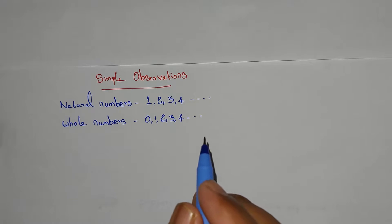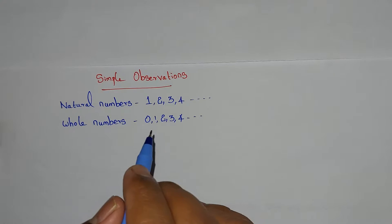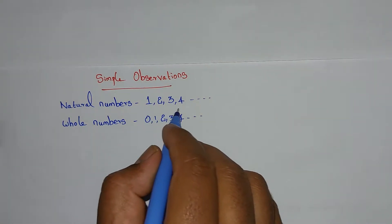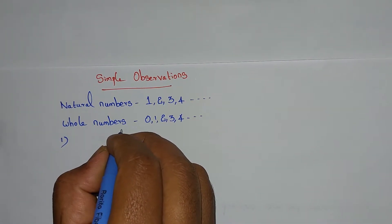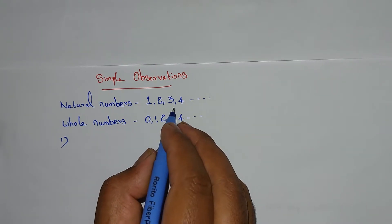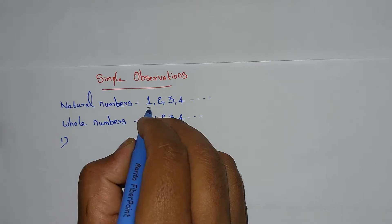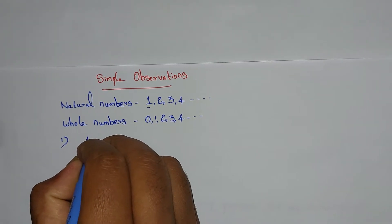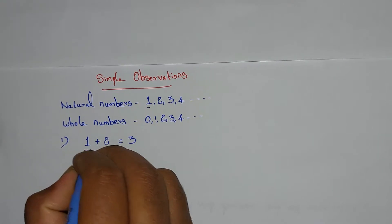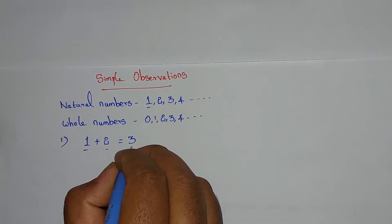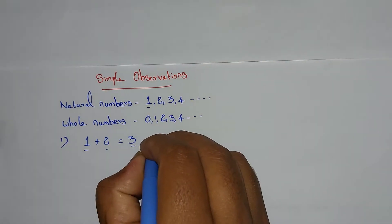First observation: if we add any two natural numbers, we will get a natural number only. For example, 1 and 2 are natural numbers; 1 plus 2 equals 3, which is also a natural number. This is the first observation.